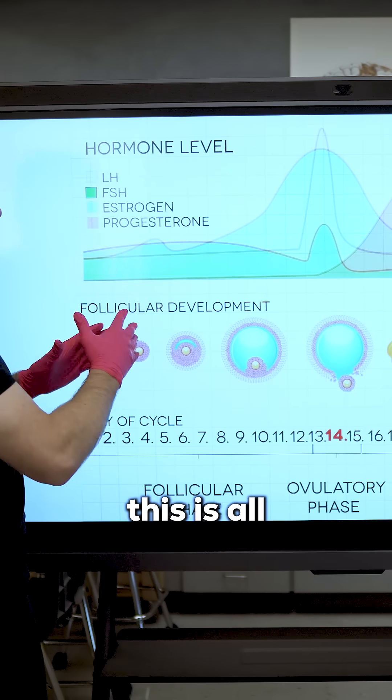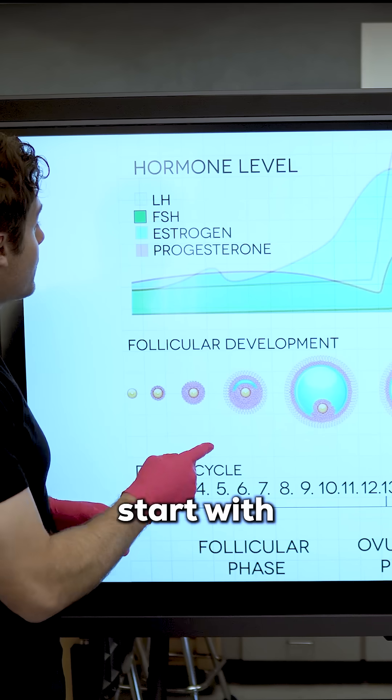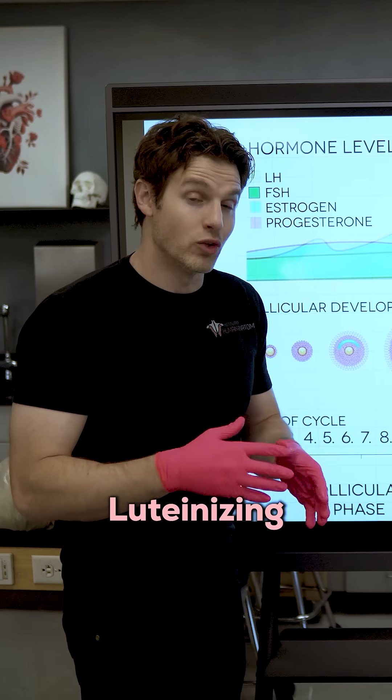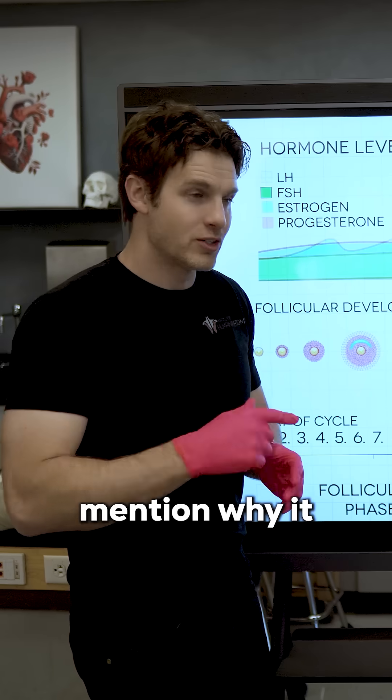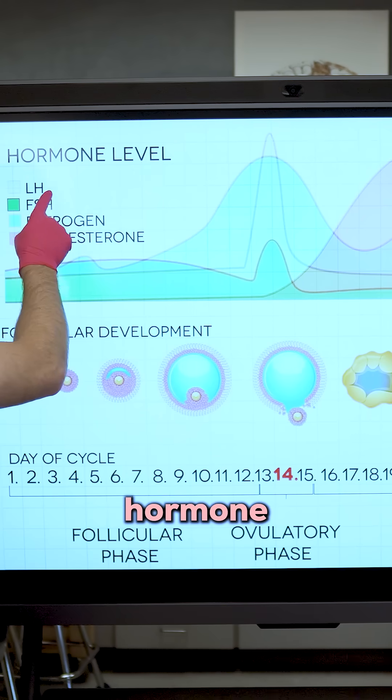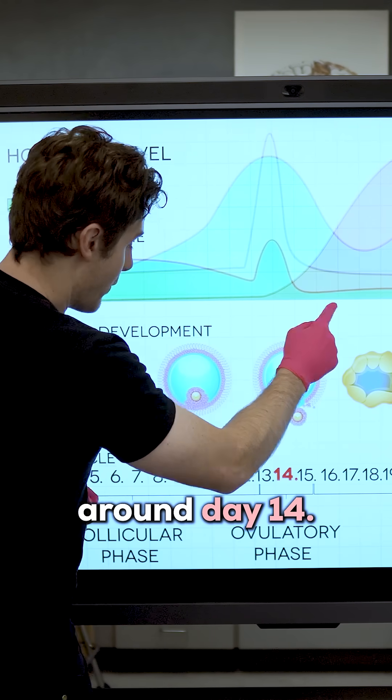But what's really interesting about this is all of the hormones that we have here. I want to start with LH and FSH. LH stands for luteinizing hormone. Luteinizing refers to yellow, and I'll mention why it got its name a little bit later on. You can see luteinizing hormone is highlighted in yellow, and we get this huge spike around day fourteen.